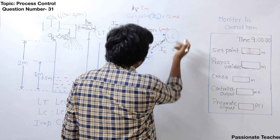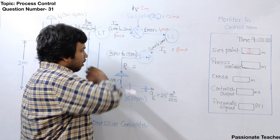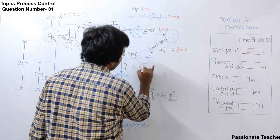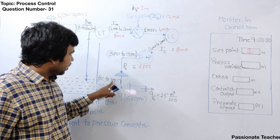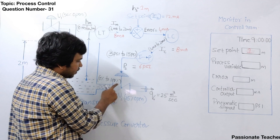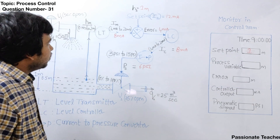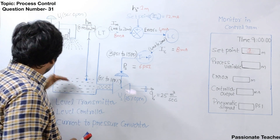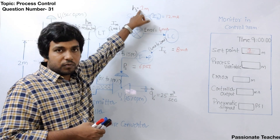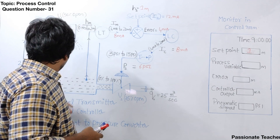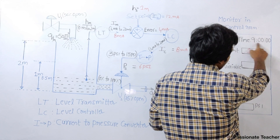With the error signal of 4 mA, let's consider the controller is generating 8 milliampere current. When it generates 8 mA, the I2P converter produces 6 psi pressure. Since 3 psi corresponds to 0% and 15 psi corresponds to 100%, a 6 psi pneumatic signal means the valve is at 25% open, giving an output flow rate of 25 cubic meters per second. We want the water level at 1 meter, but there is still an error — the current water level and the required level are not the same.